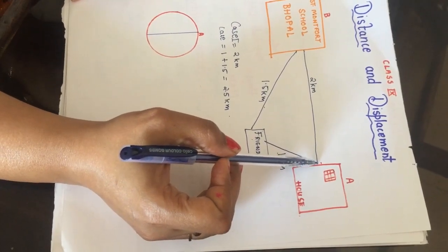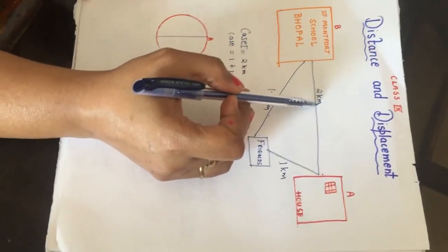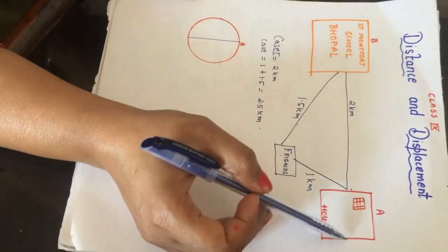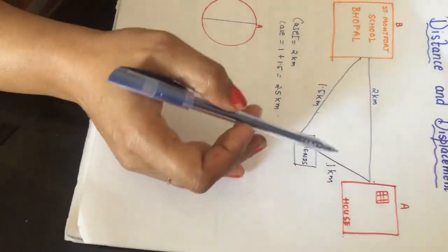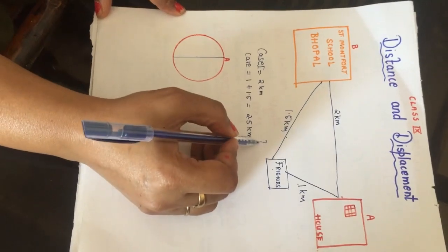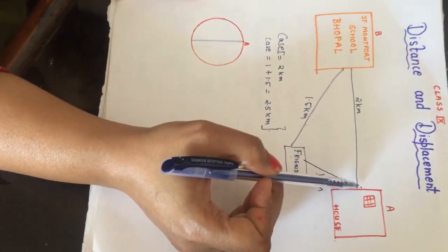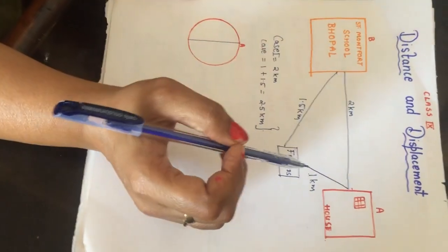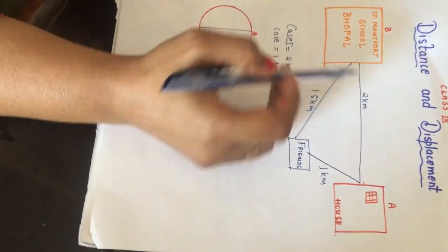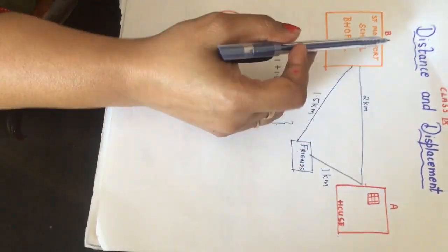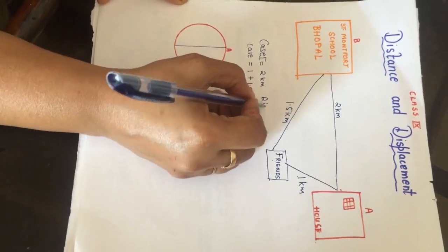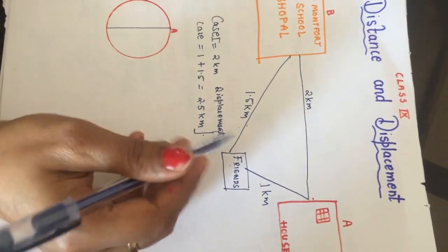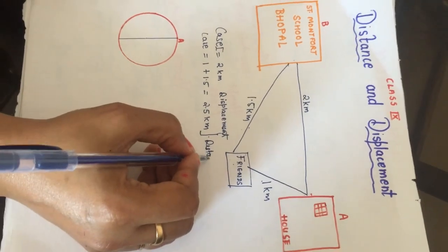The straight line between your house and the school is 2 km, while the other way is 1 km plus 1.5 km. The distance between points A and B can be covered in any way — either directly or via another place. The 2 km is the shortest distance between points A and B, so 2 km is the displacement. Any other path taken between the points is called the distance.